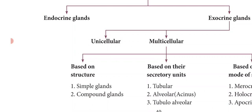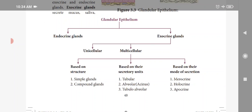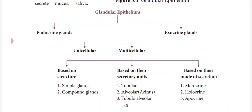The glandular epithelium is classified broadly into endocrine glands and exocrine glands. Exocrine is classified into unicellular and multicellular. Multicellular glands are classified by structure into simple and compound glands, by secretory units into tubular, alveolar and tubulo-alveolar, and by mode of secretion into merocrine, holocrine and apocrine glands.